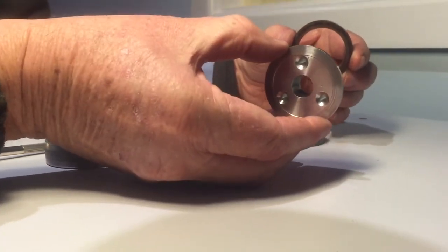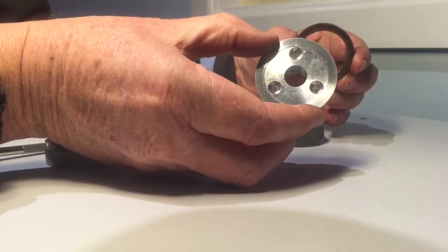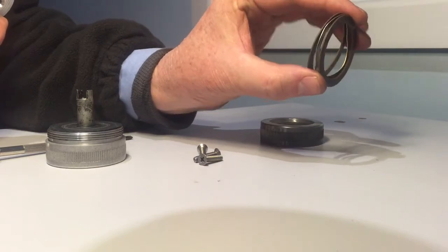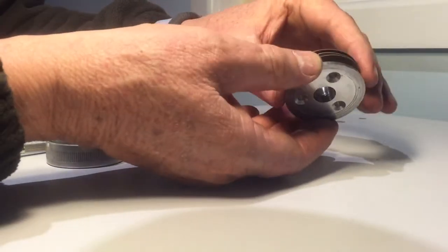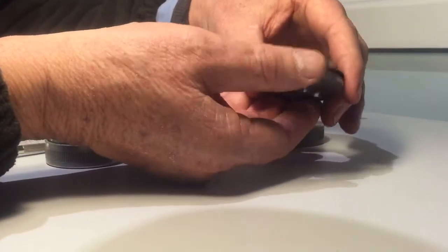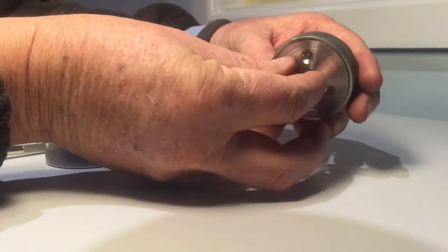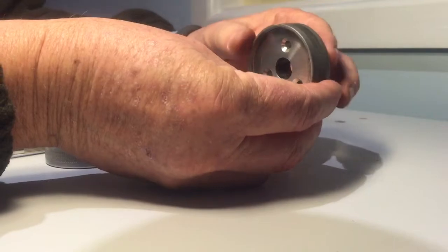So that bit bolts onto the control wheel there. And these, you can see there's a couple of washers and a spring that goes on there, the back part of the knob goes on there.